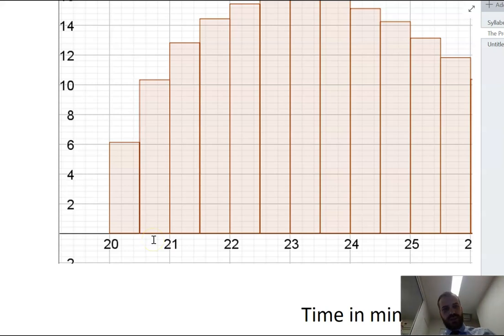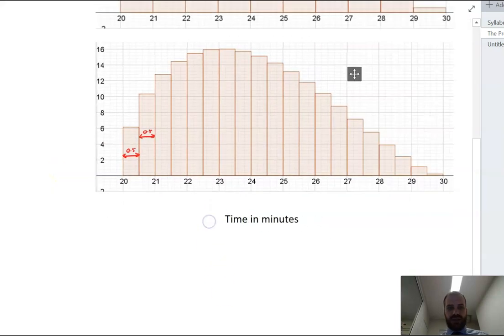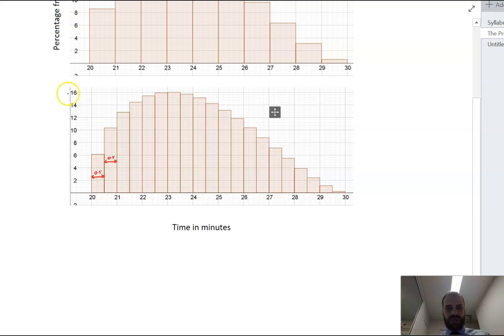Zooming in on this one, we can see that the bin width here is 0.5. It's 20 to 20.5, 0.5. And of course, that's going to be the same here. Now, with this particular histogram, we can't just look up the side to find out our probability of something happening. We instead have to use that bin width in conjunction with this number on the side. So let's find a probability from this one. Let's find the probability of running between 20 and 20.5.